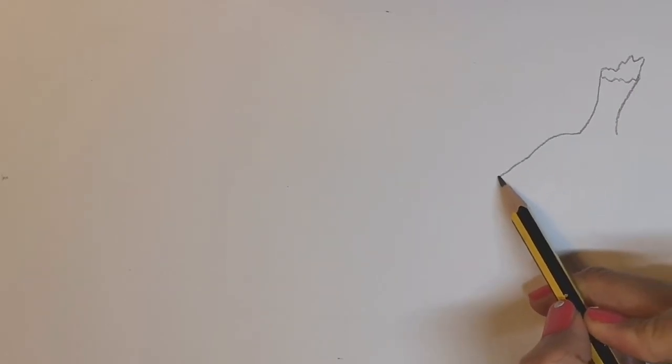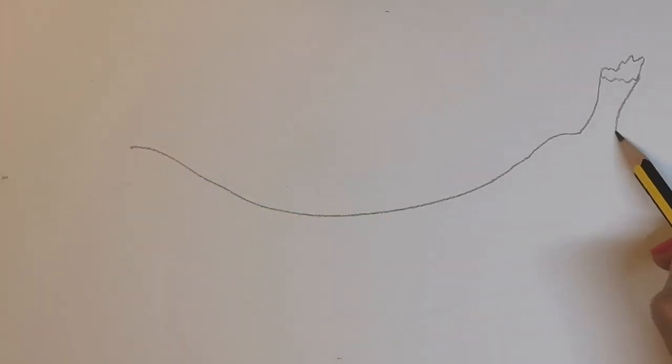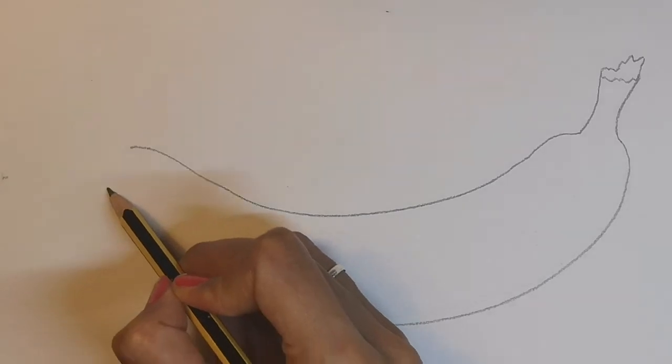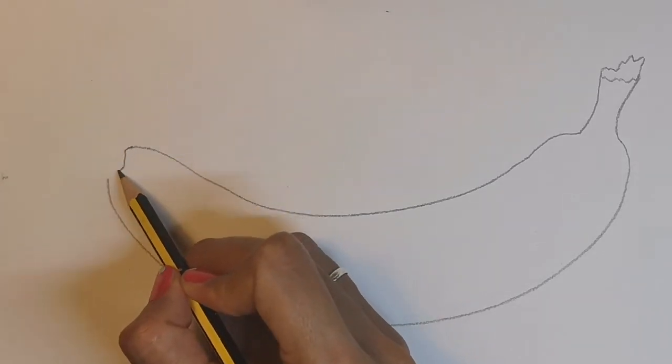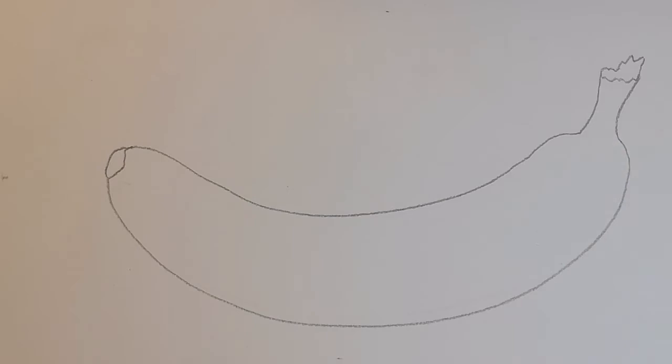Now draw a long curved smile for the top and follow that same shape round for the bottom of the banana, ending in that strange little shape at the end.